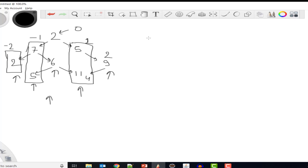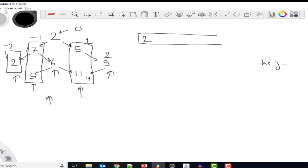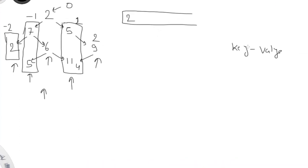We take a queue and put the root element into it. We also take a map so we can track one element per vertical level — since for the bottom view we print one element for each level. For minus 2 we print 2, for minus 1 we print 5, for level 0 we print 6, for level 1 we print 4, and for level 2 we print 9. In the map, the key is the vertical height and the value is the node value to print.